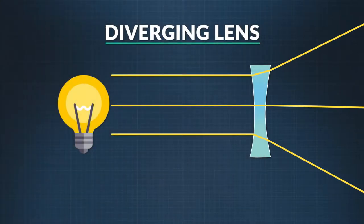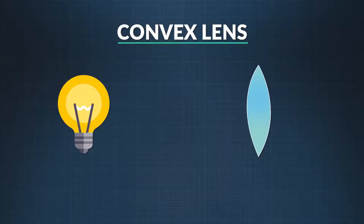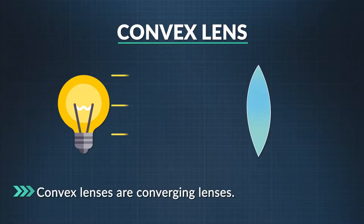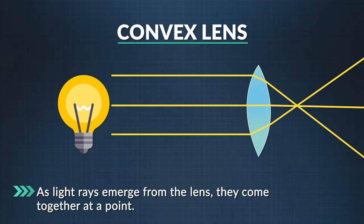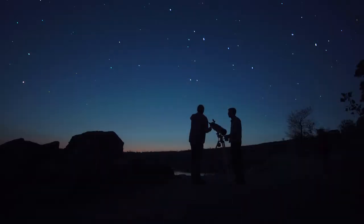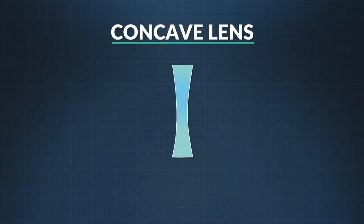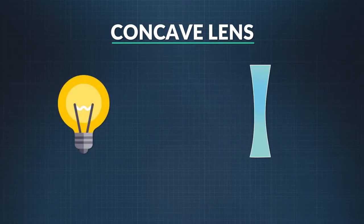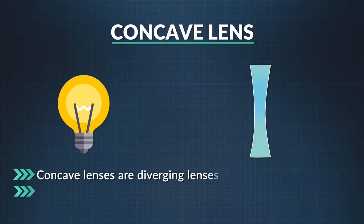Whether rays converge or diverge depends on the shape of the lens. There are two main kinds of lens shapes. The first is a convex lens, which means it curves outward. Convex lenses are converging lenses — the light rays come together at a point as they emerge from the lens. Convex lenses are used in things like telescopes to bring distant light rays to a focus. The second type is the concave lens, which curves inward. We are particularly interested in biconcave lenses, curved inwards on both sides. Looking at the shape, you can predict that light rays will diverge, or spread out.